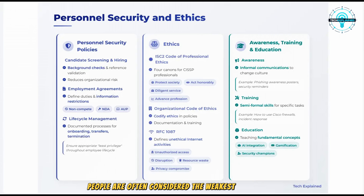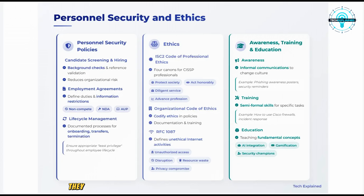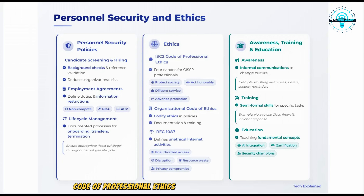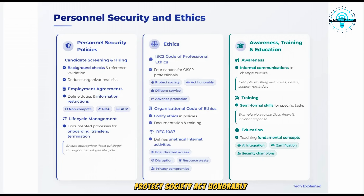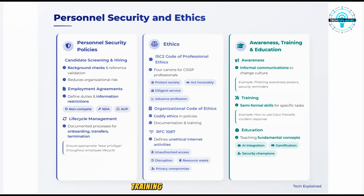People are often considered the weakest link in security, but they can also be your greatest asset when properly trained and motivated. Personnel security policies cover the entire employee life cycle, from candidate screening and hiring to onboarding, transfers, and termination, and include agreements like NDAs and Acceptable Use Policies (AUPs). Ethics are crucial in security — the ISC-2 Code of Professional Ethics comprises four canons: protect society, act honorably, provide diligent service, and advance the profession. Awareness, training, and education are essential: awareness is informal and aims to change cultural sensitivity, training provides specific skills, and education teaches fundamental concepts.